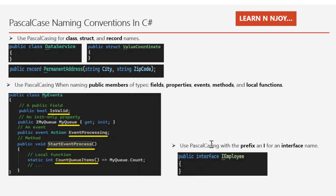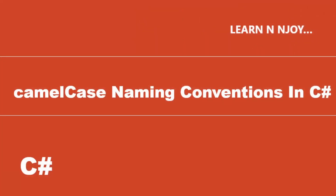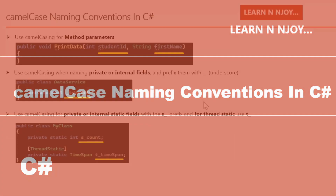Use case number three: use Pascal casing with the prefix 'I' for interface names. Whenever we write an interface, we prefix it with 'I' and then use Pascal casing for the rest. For example, 'public interface IImply' — the I is the prefix, and Imply is written in Pascal case. That is how we write interface names.